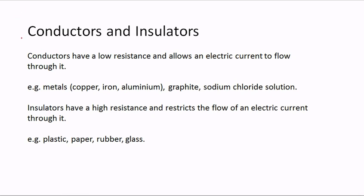The first thing we need to understand is the difference between conductors and insulators. Conductors have a low resistance and allow an electric current to flow through them. Examples of conductors are metals — for example copper, iron, aluminium — and graphite,